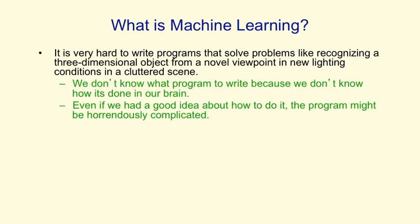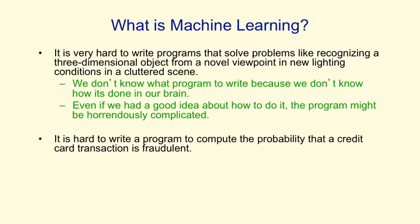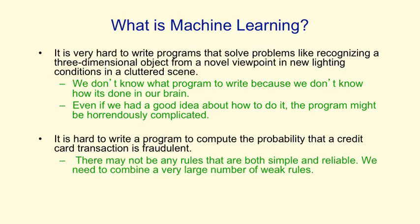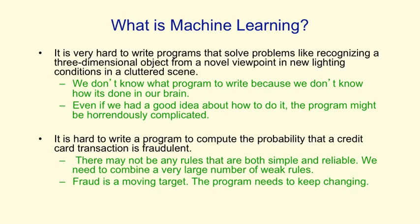Another example is detecting a fraudulent credit card transaction, where there may not be any nice simple rules that will tell you it's fraudulent. You really need to combine a very large number of not very reliable rules. And those rules change over time because people change the tricks they use for fraud. So we need a complicated program that combines unreliable rules and that we can change easily.